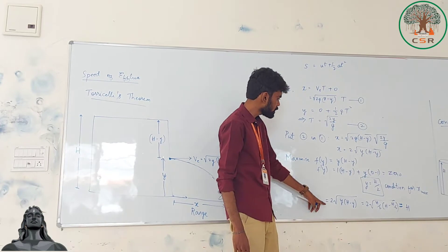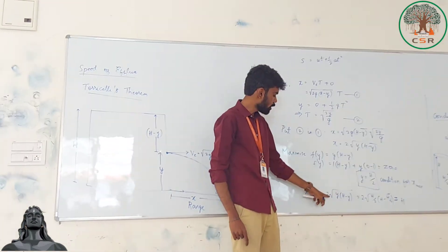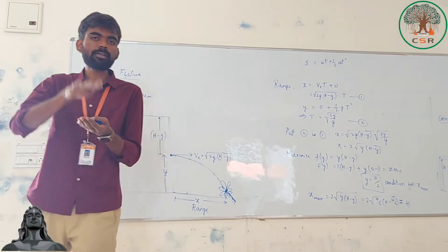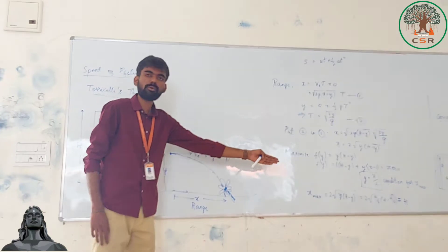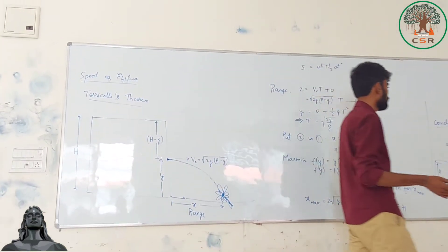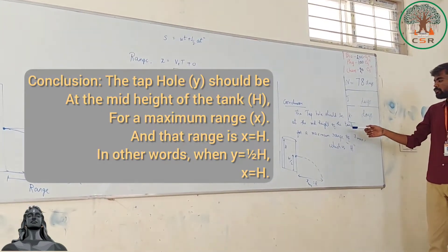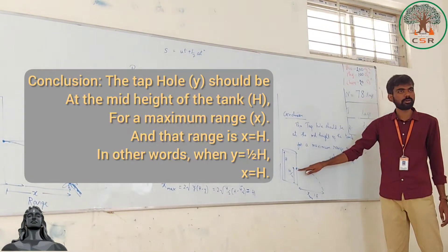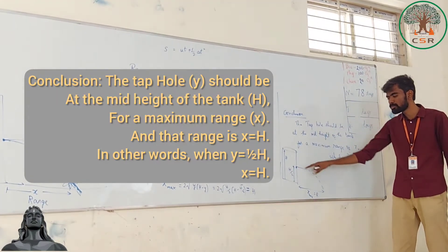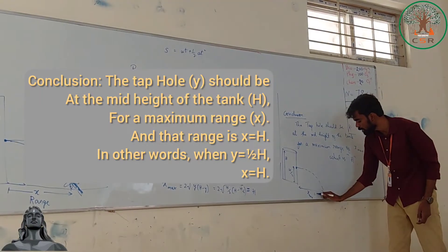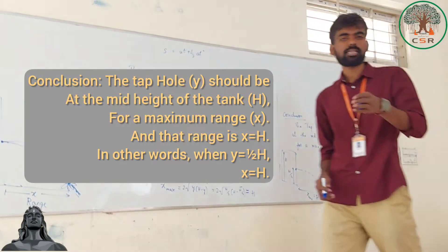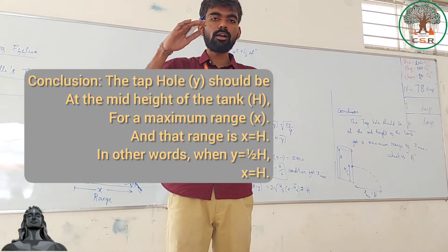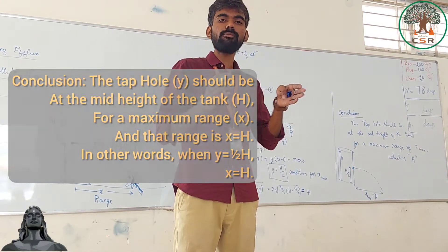The maximum range x-max comes when the tap is at mid-height: substituting y equal to h/2 into x equals 2 times root of y(h minus y) gives x-max equal to h. So the conclusion is: if you make a hole at the mid-height of the tank (h by 2), the maximum range of the water equals the height of the tank itself.